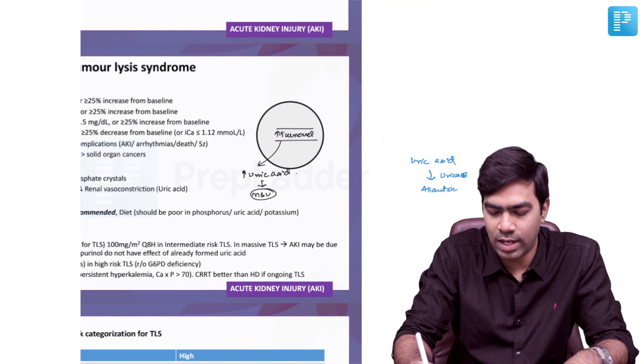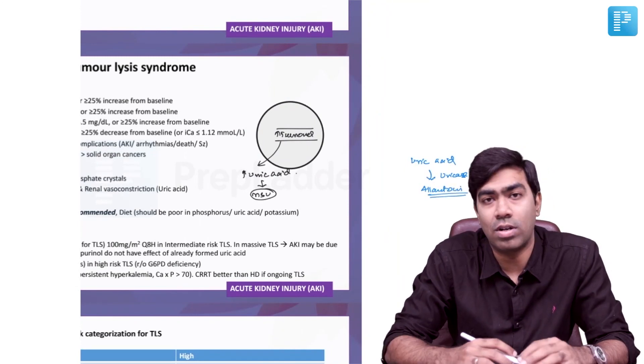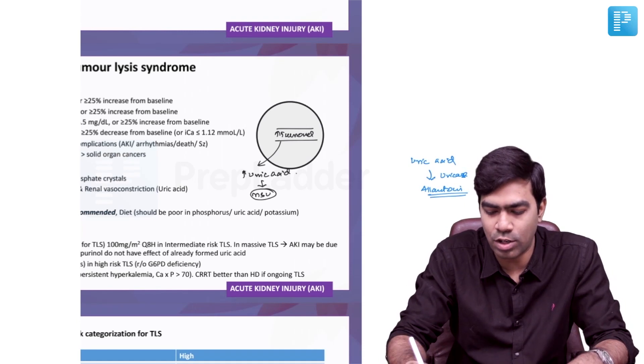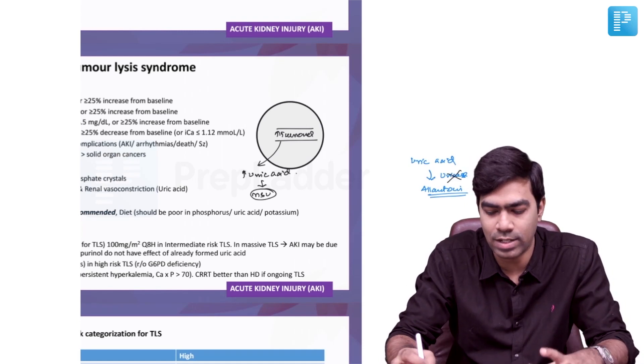And allantoin is an extremely water-soluble compound, so it does not precipitate at all, but humans have lost the uricase enzyme.